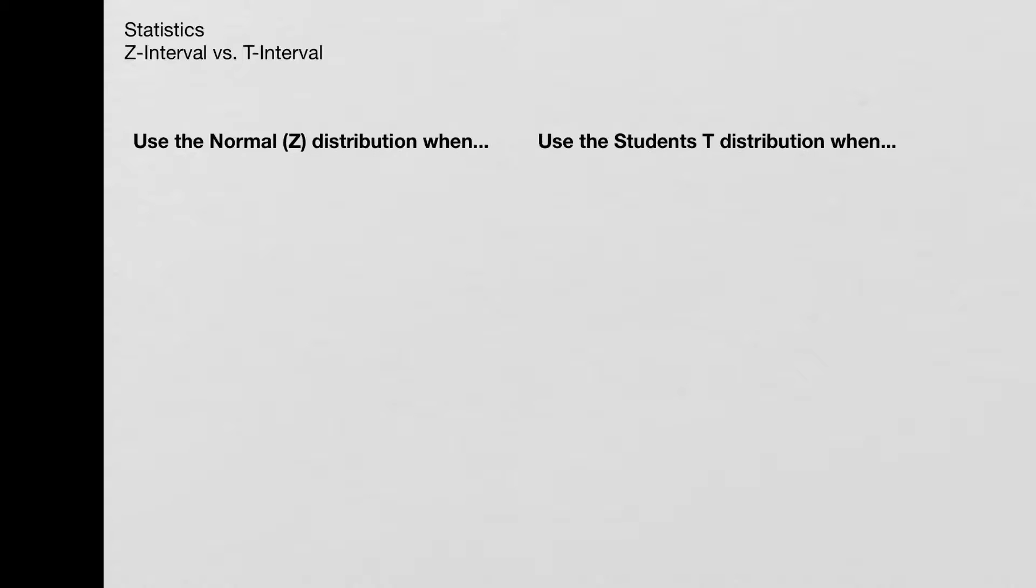One of the most common questions that I get is, how do I know whether I should use z-interval or t-interval to find a confidence interval for a mean?